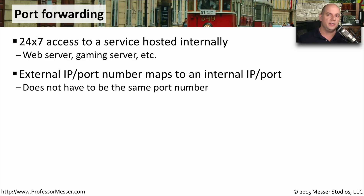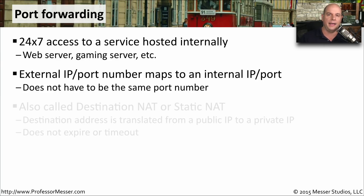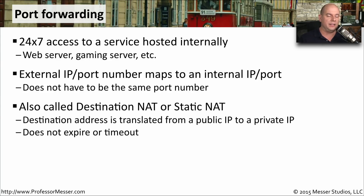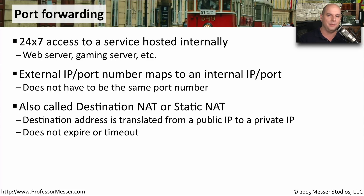We're able to do this by configuring a wireless router to take the external IP address and a port number that you assign and automatically translate that to an internal IP address and port number that you specify. This is called destination NAT. Some people might call this static NAT, because you're setting up a static connection between an outside IP address and port number and an internal IP address and port number. This port forwarding is set up permanently — once you make the configuration change, anyone from the outside can access that particular service at any time of the day.